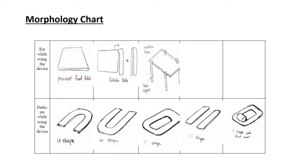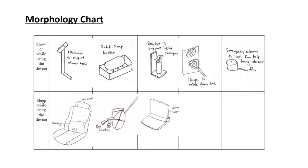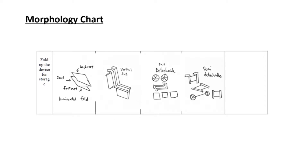For the eating features, this can be done by installing a table — whether foldable, permanently fixed, or insertable. For the defecation features, we make modifications on the seat by opening a hole in the center. For the shower features, we add extra accessories and hardware to achieve the function. The sleeping function can be achieved by making the backrest detachable or adjustable. The last option is making the device foldable — it might be semi-detachable, fully detachable, or just vertically foldable.